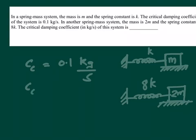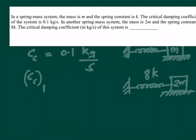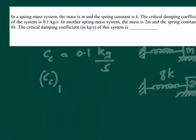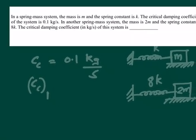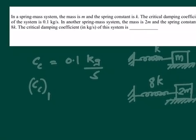Let me compute the c_c of first system. So c_c of the first system will be 2 times square root of k times m, am I right?